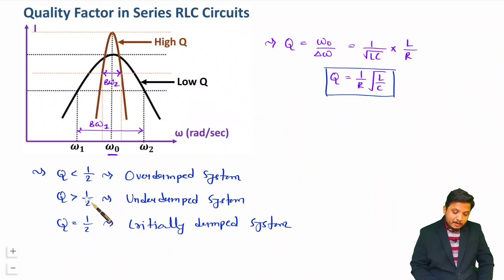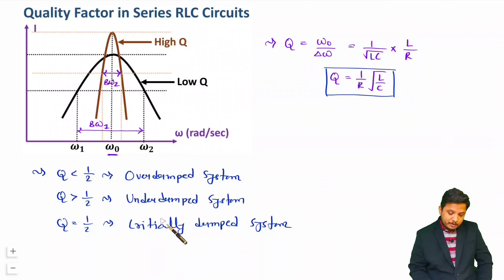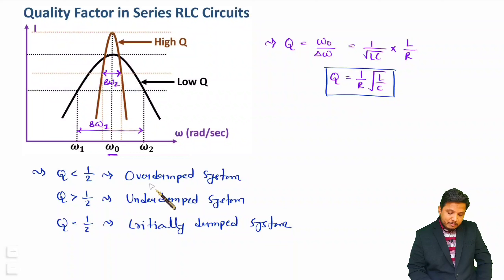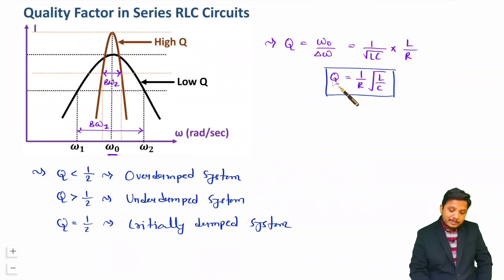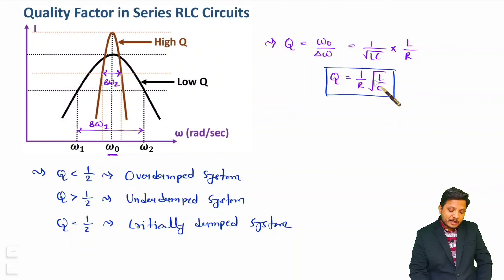So here we have a series RLC circuit which is our system. Sometimes you may be given a quality factor and told that the circuit is under-damped. What it means is Q is greater than half. And if Q is less than half, you may need to identify the relation of R, L, and C with each other — this is the type of question that may come.